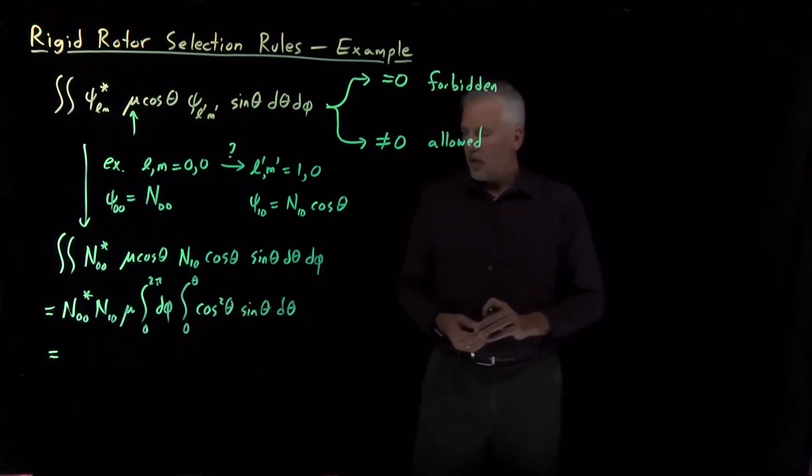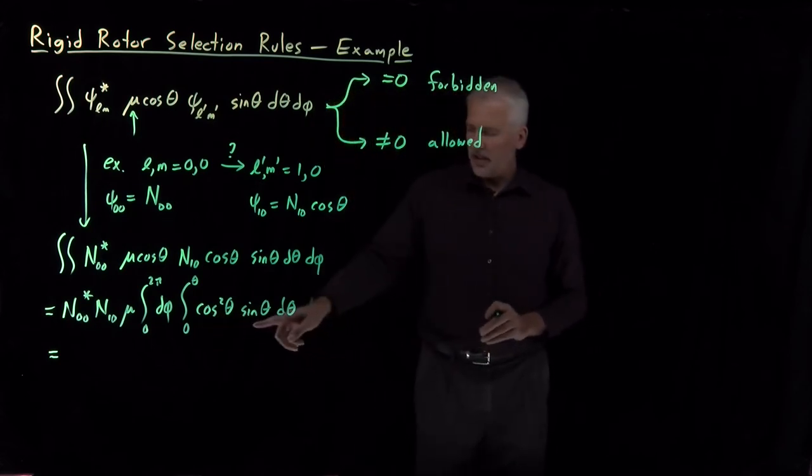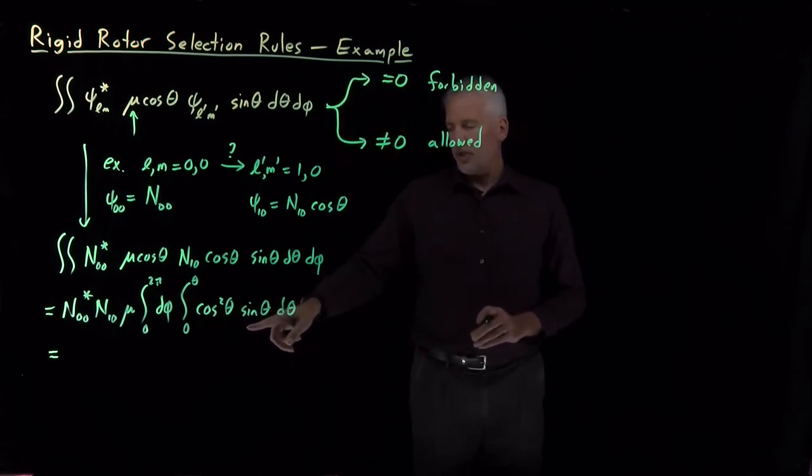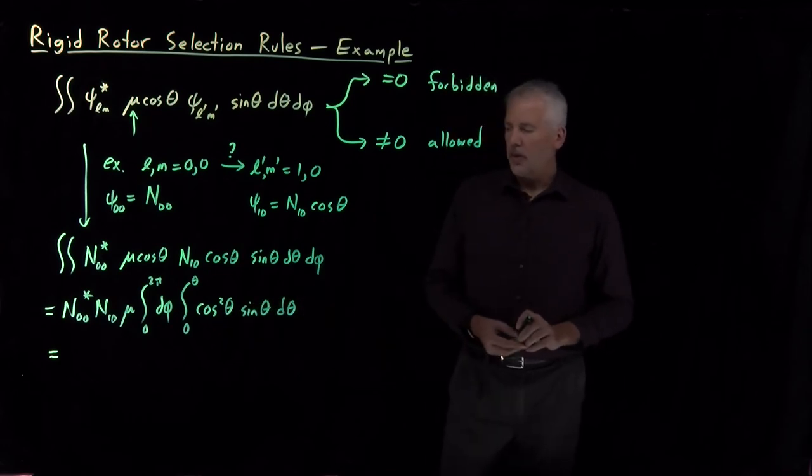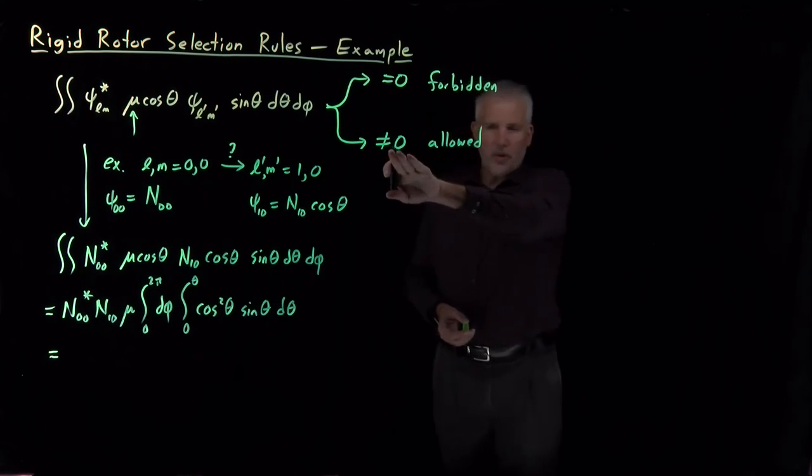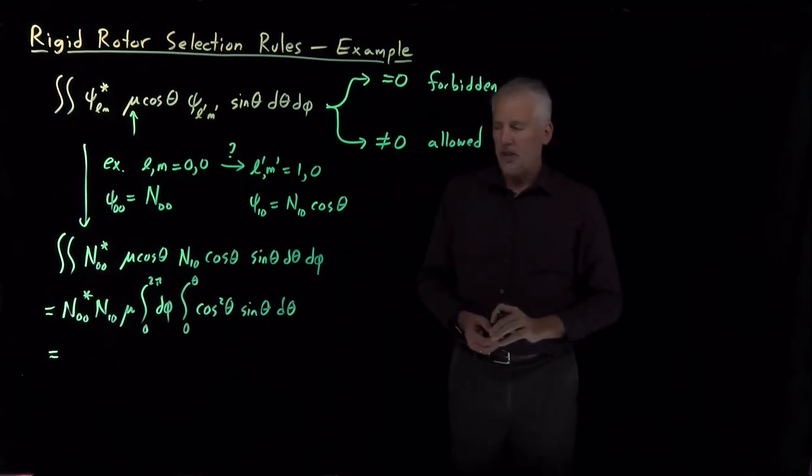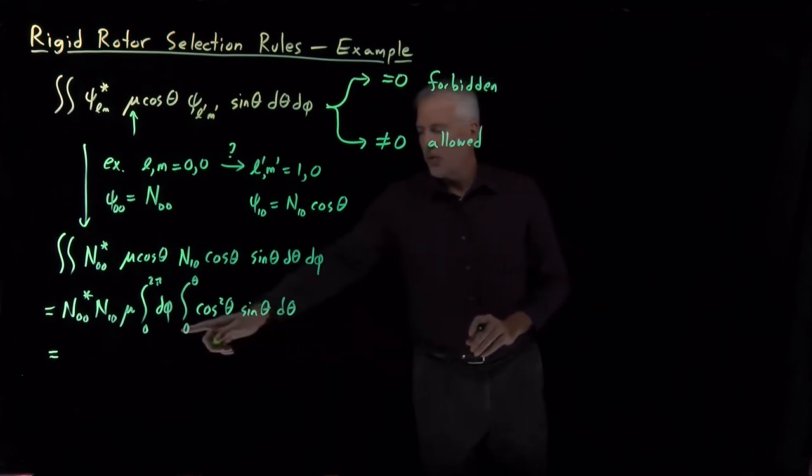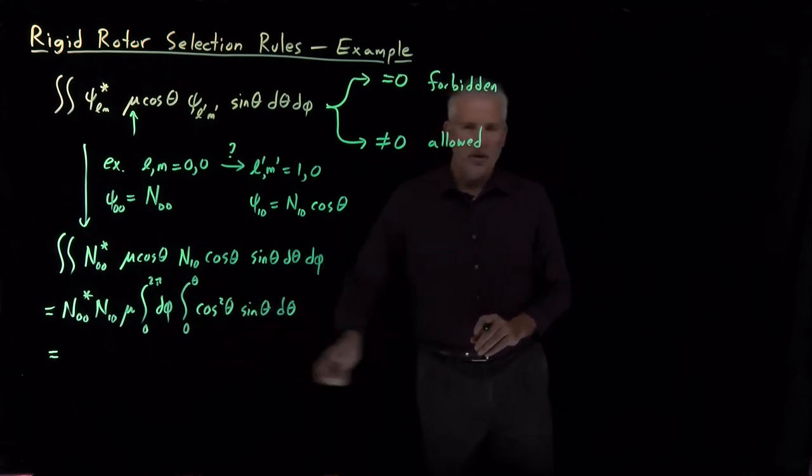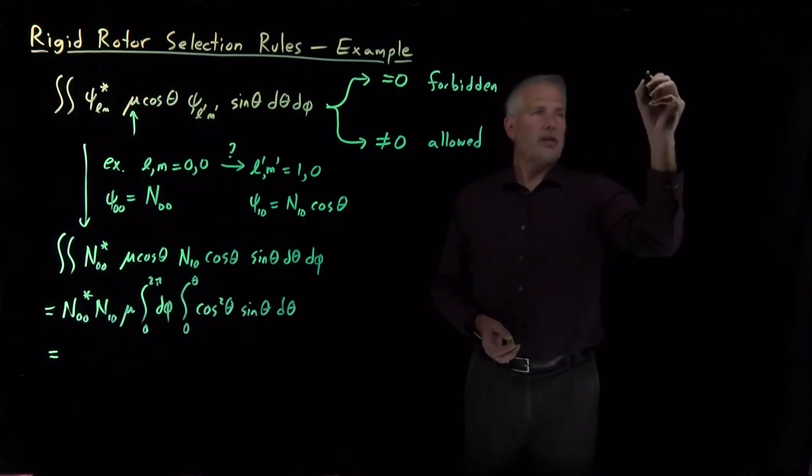So the theta integral, certainly we could do this integral. It's not too difficult to do. U substitution with u equal to cosine theta would resolve it pretty quickly. But we can take advantage of this shortcut that we don't care what the numerical value is. We don't care what specific value that integral comes out to be. We just want to know, does this theta integral come out to be zero or doesn't it? So to do that, let's take a look at the symmetry of that function.